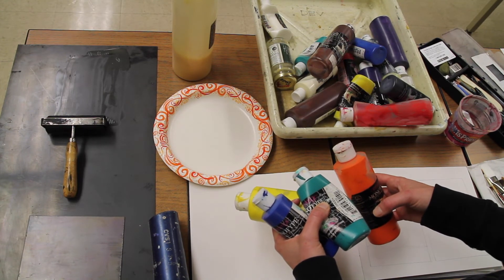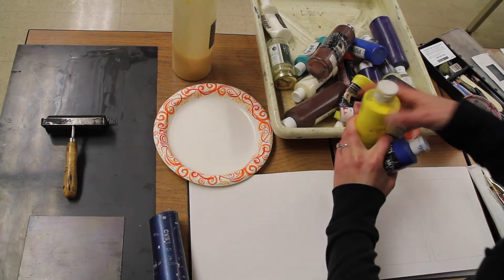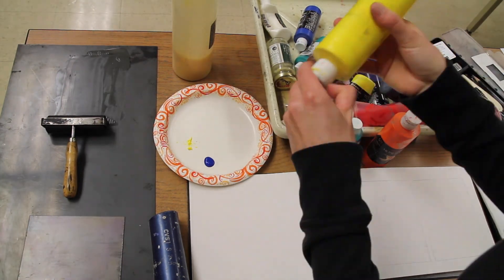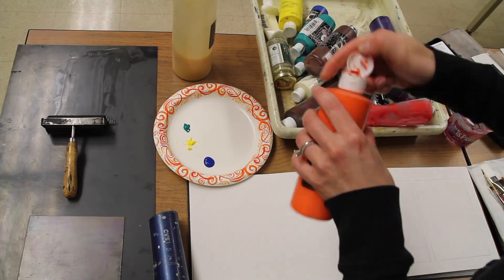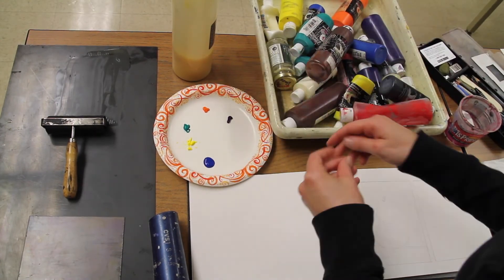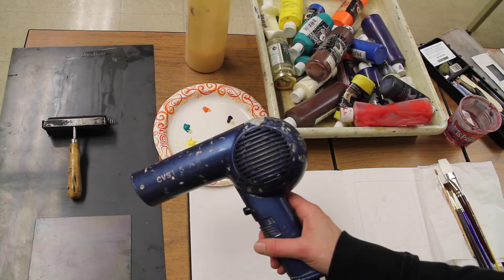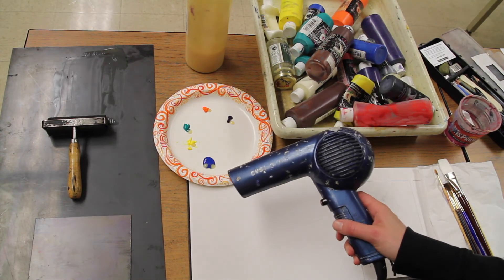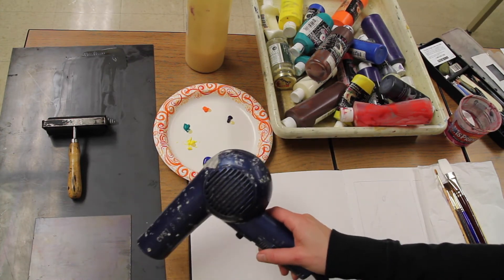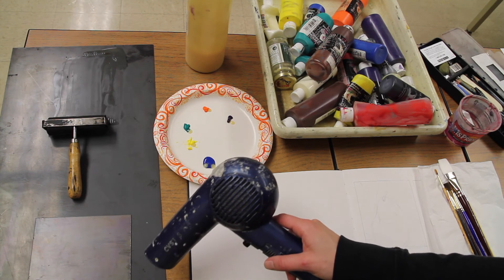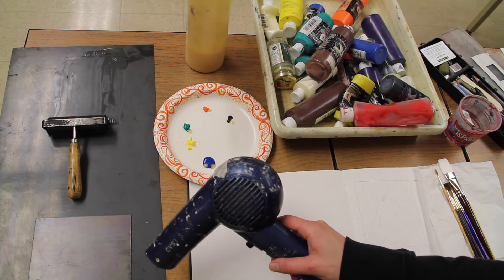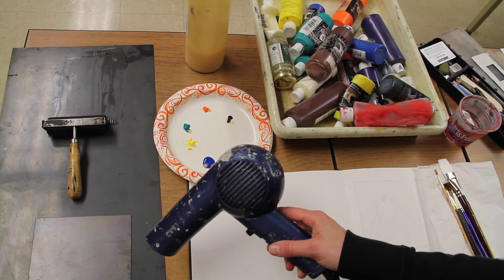Now that my inks are prepared, I'm going to quickly blow dry my plate just to make sure that it is dry and that the monotype base I put on the plate is completely dry before I put the ink onto the plate.